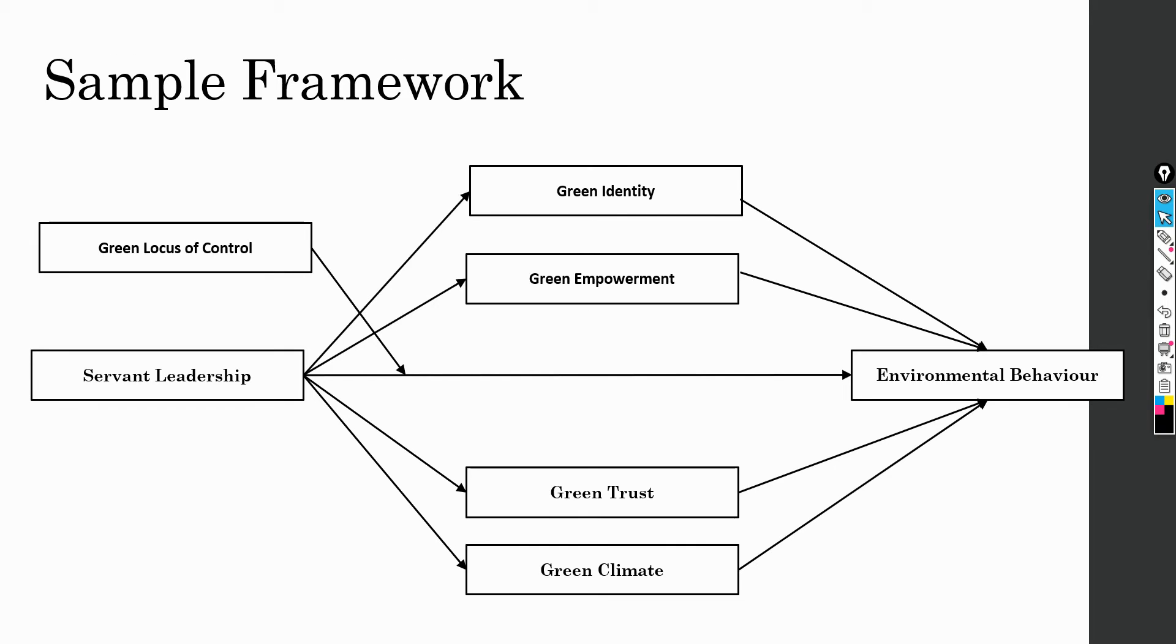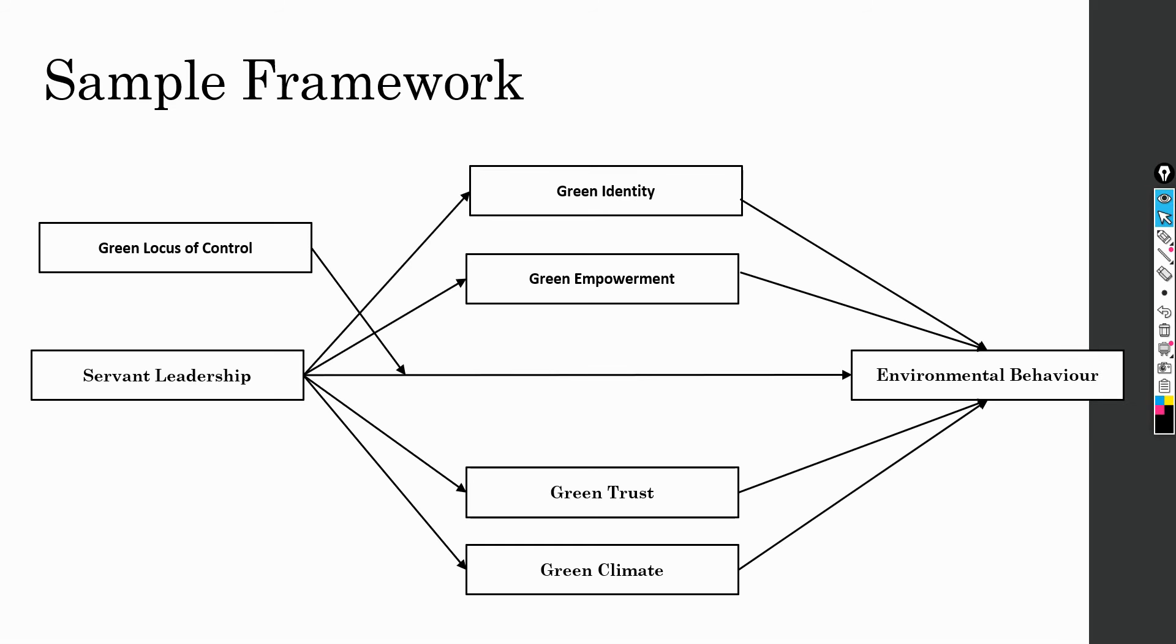During part of this series, we developed this model. In light of this model, the first step is obviously conceptualization. Before you actually get down to how to measure a particular construct—servant leadership, green identity, green empowerment, or all the other constructs in the study—the first step is to identify how you are going to conceptualize these variables here.